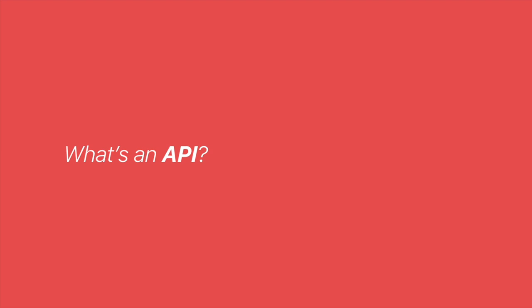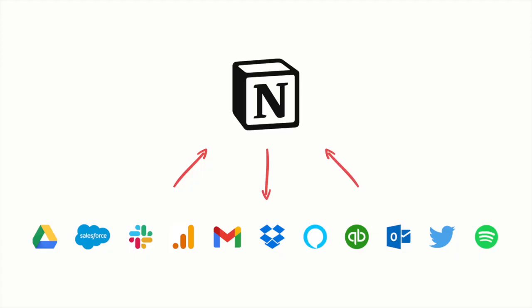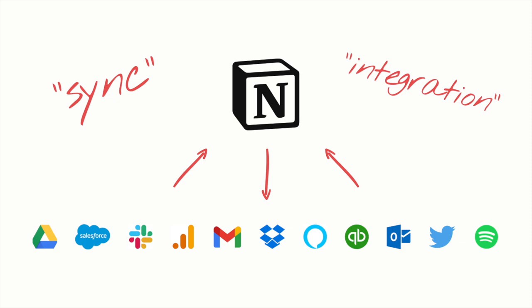API stands for Application Programming Interface. APIs allow apps to integrate with other apps where they can exchange information and make updates to each other. So apps that schedule social media posts use the Facebook and Twitter APIs. Accounting apps use your bank's API. And tools that merge your cloud drives do so with the APIs of Google Drive, Dropbox, and other services. Pretty much any time you see the term sync or integration in a service, it's likely using an API.